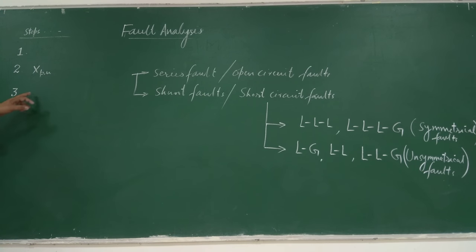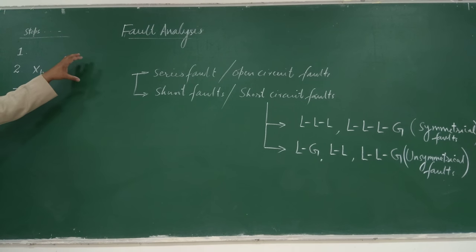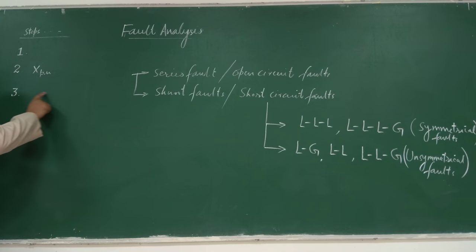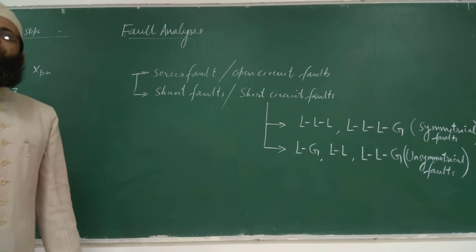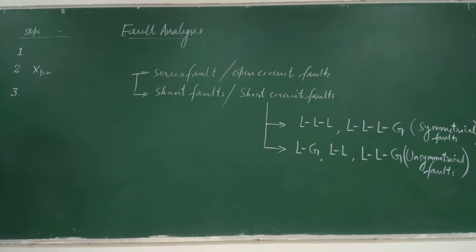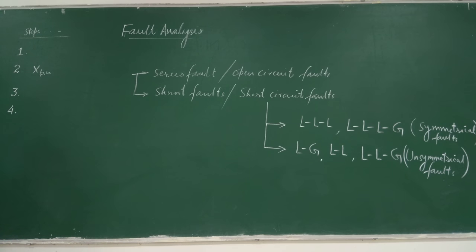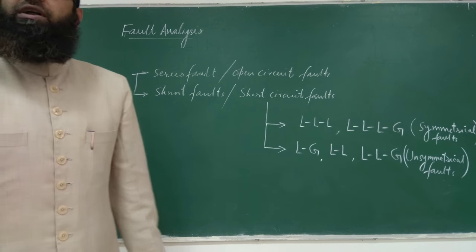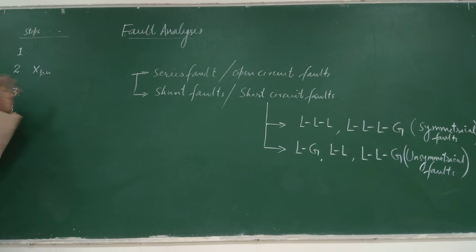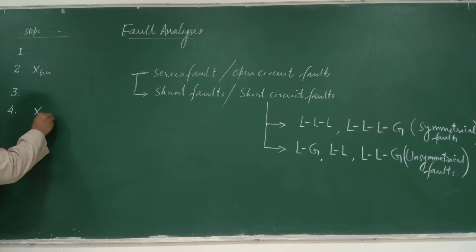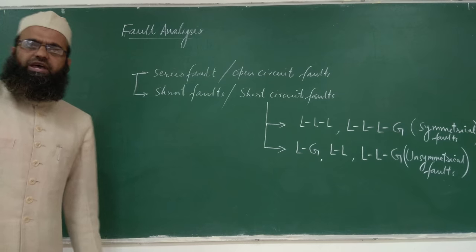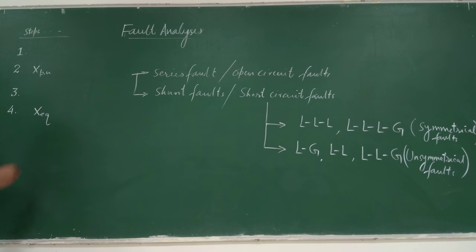Step three: draw the single line reactance diagram. Once you have evaluated per unit reactances of each element of the power system, draw the single line reactance diagram on a per phase basis, showing per phase with respect to neutral.